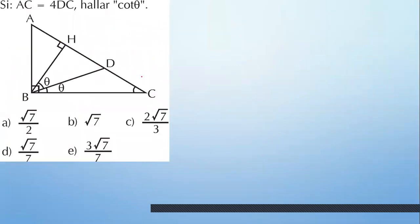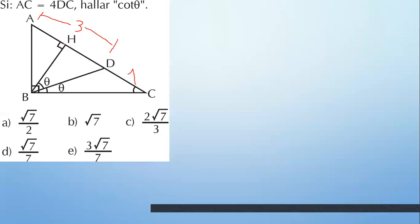Siguiente problema. Te están diciendo que AC es igual a 4 de C. No te han dado el valor, entonces ponle tú uno. Ponle 1. AC es el cuádruple de C: si esto es 1, AC sería 4. Si aquí tienes 1, te faltaría 3 para llegar a 4. De A a D es 3, y AC es 4. Tienes ángulos de 90 grados. ¿Qué sería este ángulo? El complemento. Si aquí es theta, aquí sería 90 grados menos theta.